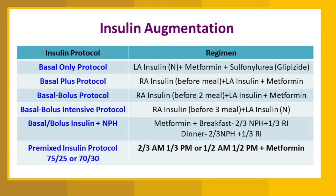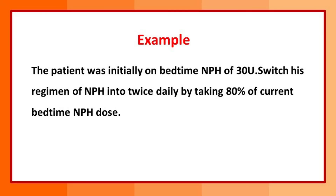If you have seen any other way insulin is prescribed, mention it in the comment section so everyone can learn. Now let's look at an example — try to solve this yourself first. A patient was initially on bedtime NPH insulin of 30 units. We need to switch his regimen to twice-daily NPH dosing by reducing to 80% of his current bedtime NPH dose.